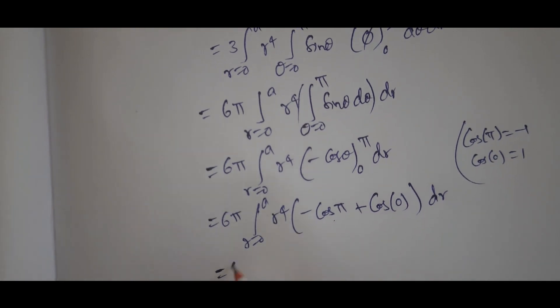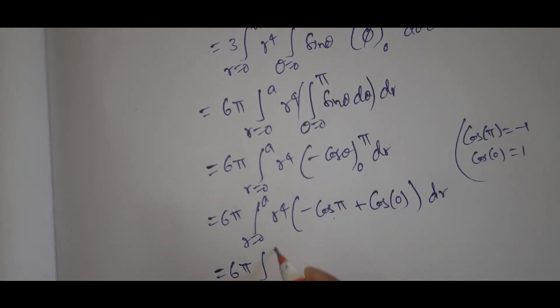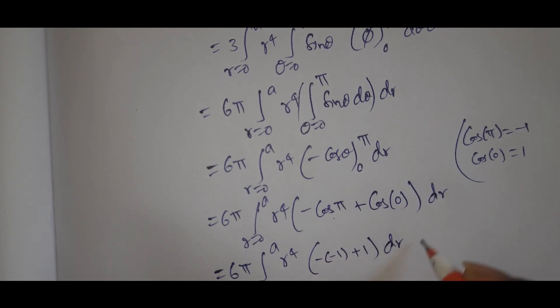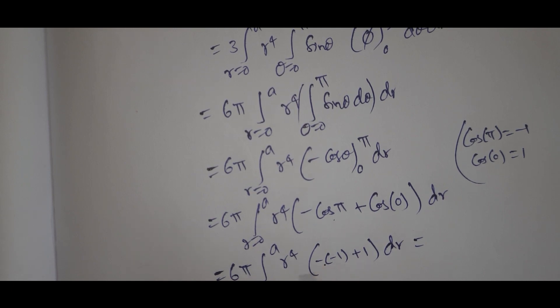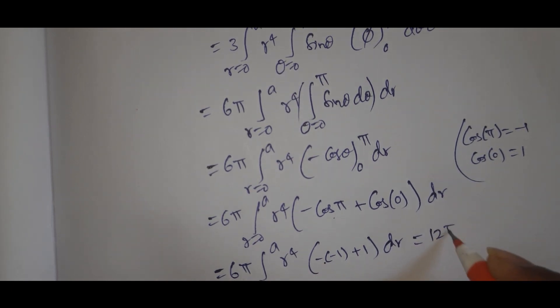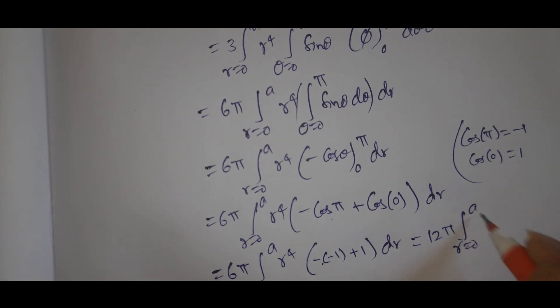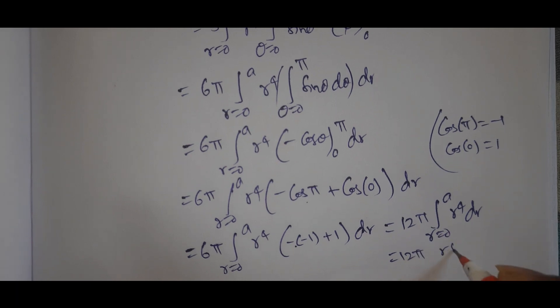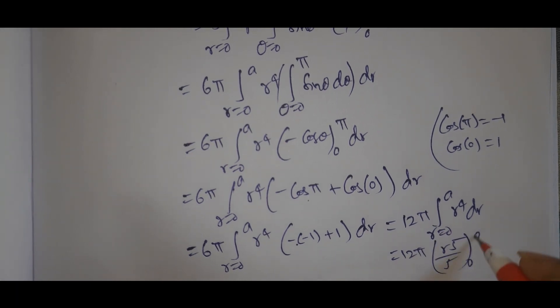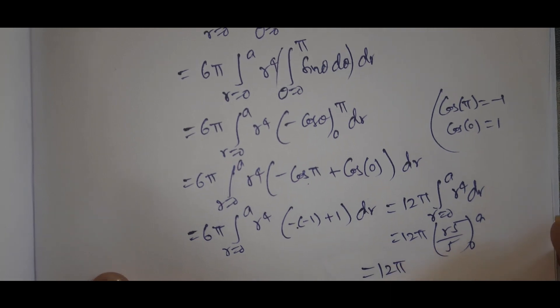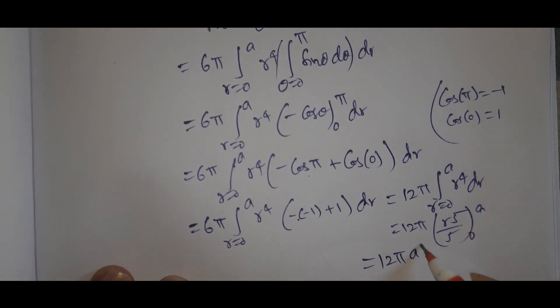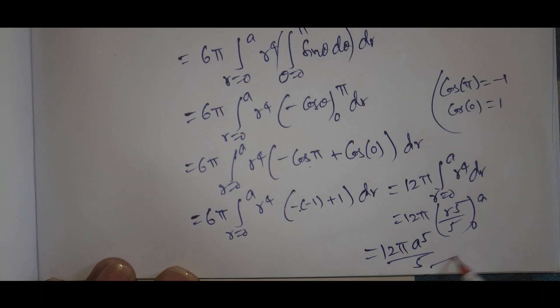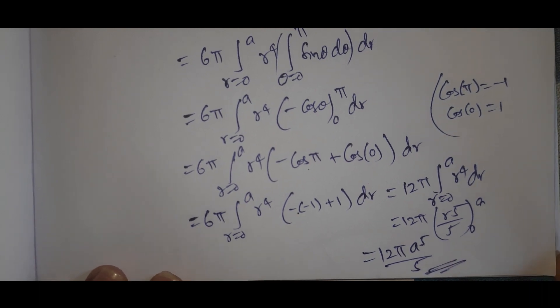That's 6pi integral r equals 0 to A r to the fourth times minus cosine pi minus minus cosine 0 dr. Cosine pi is minus 1, cosine 0 is 1, so minus of minus 1 plus 1 equals 2. So 2 times 6pi is 12pi. 12pi integral r equals 0 to A r to the fourth dr equals 12pi times r to the fifth over 5 from 0 to A, which equals 12pi A to the fifth over 5. This is the answer.